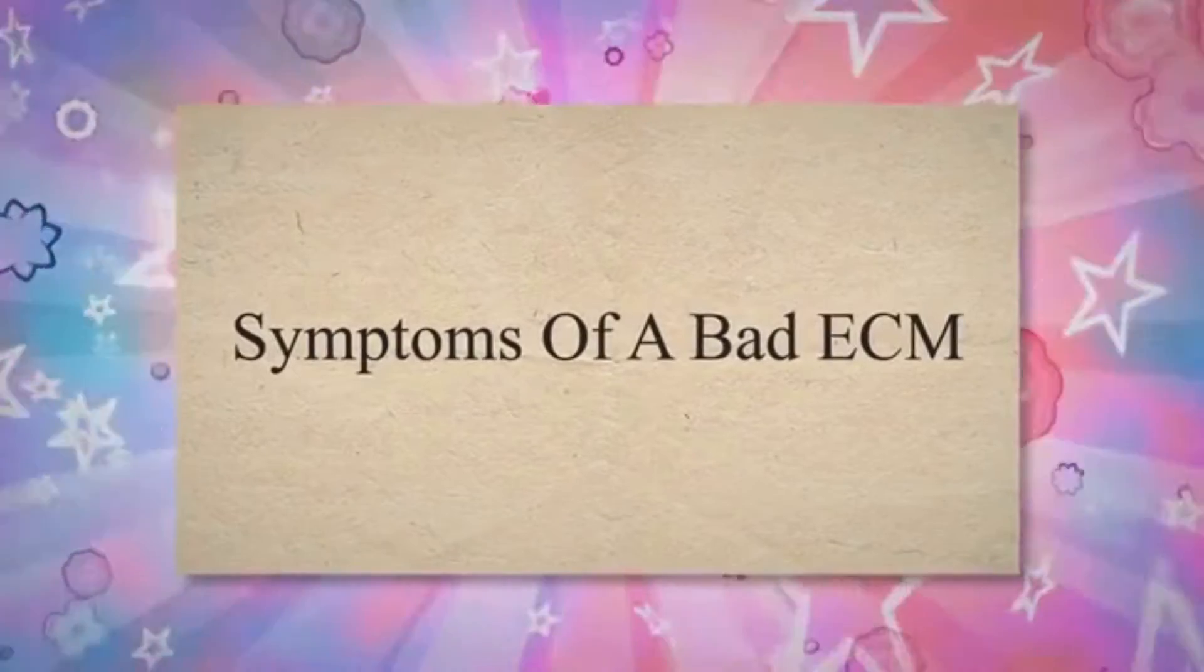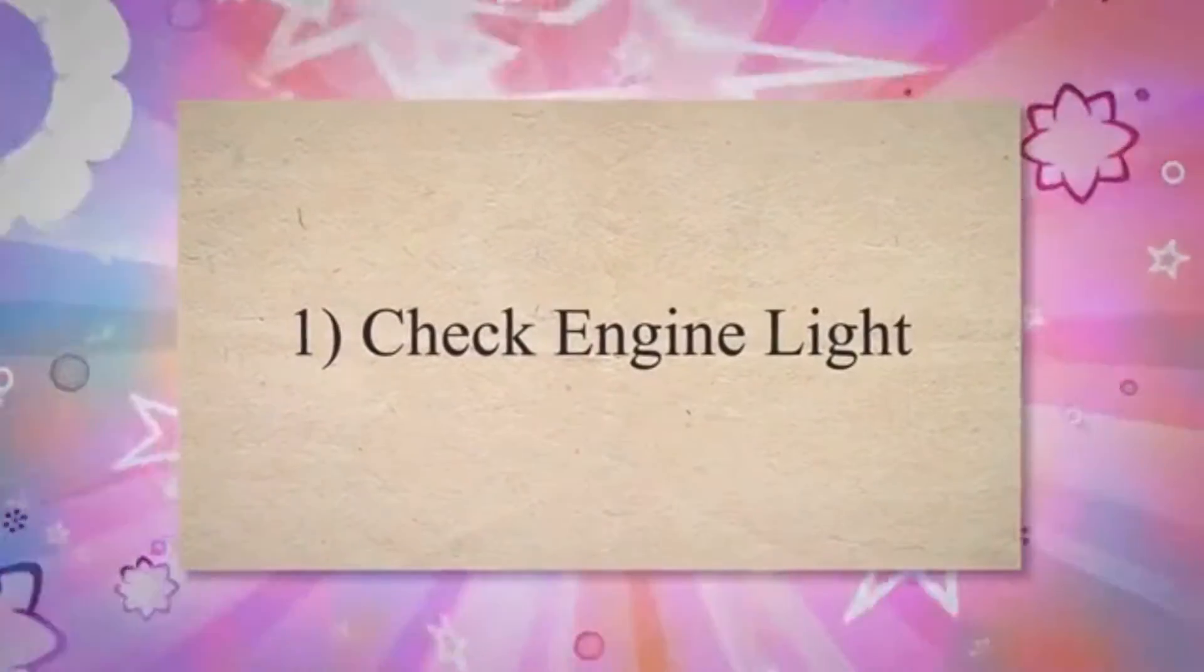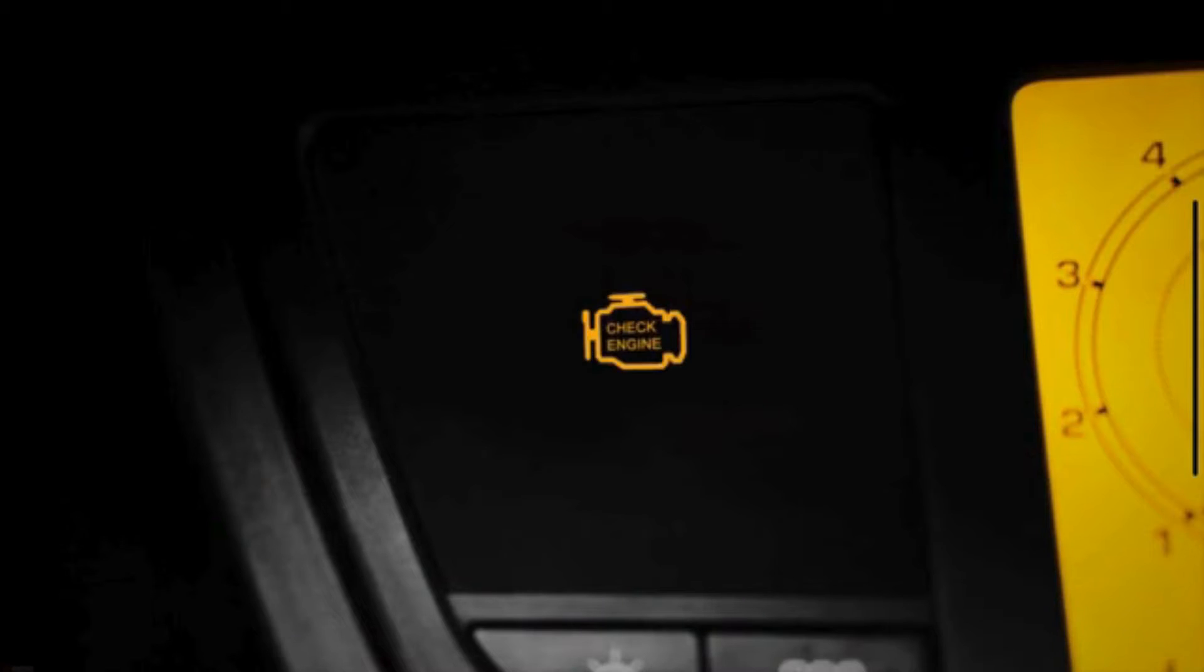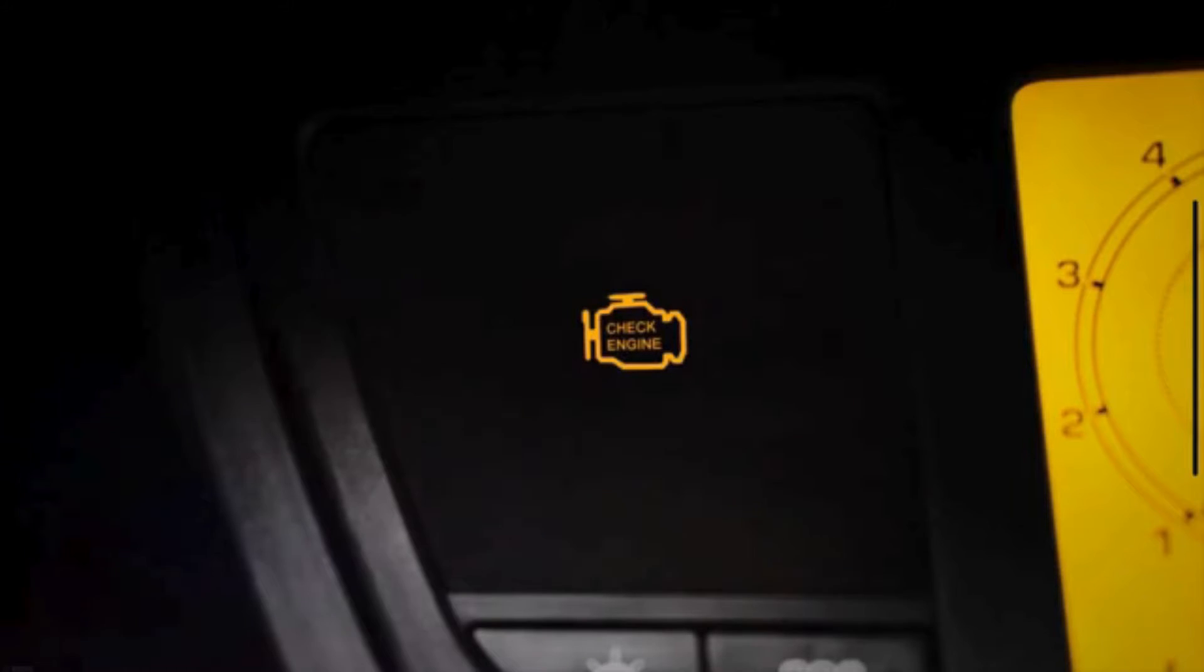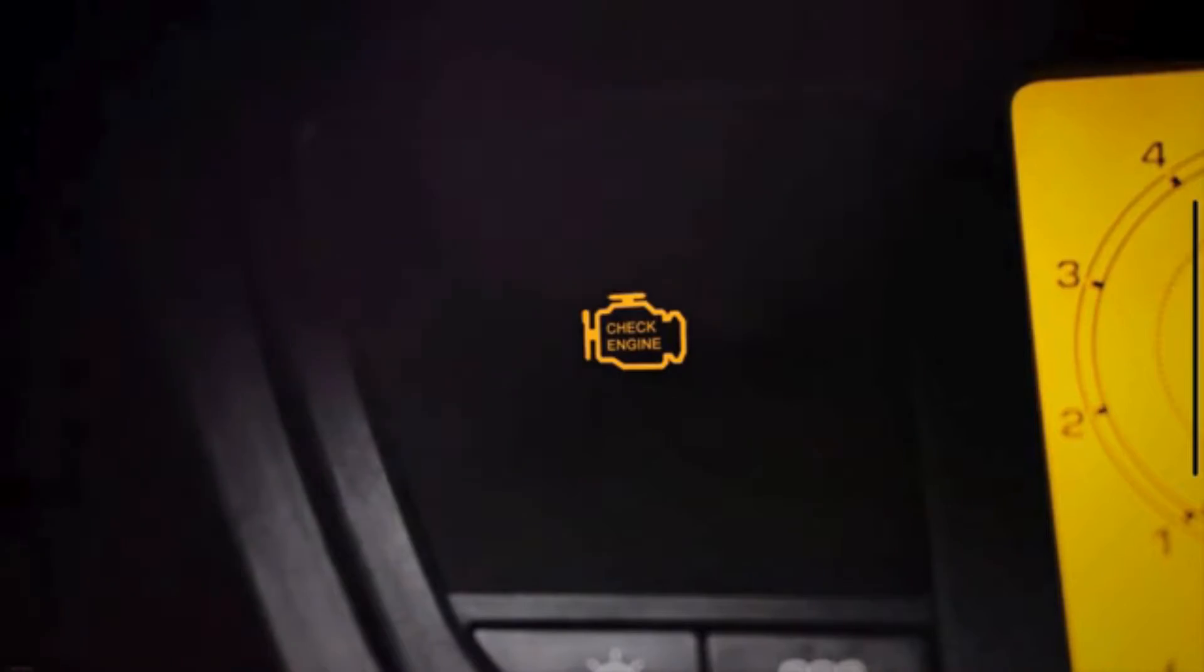Symptoms of a Bad ECM. Number 1: Check Engine Light. The latest vehicle models contain a check engine light that alerts you to any problems. The ECM of your vehicle is responsible for controlling various parts of the engine. When a sensor or electrical component connected to the ECM doesn't work properly, it turns on the check engine light.